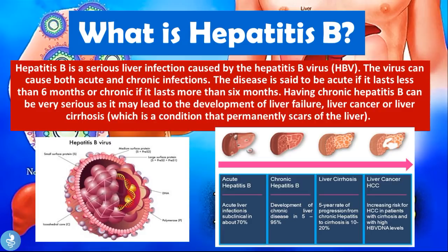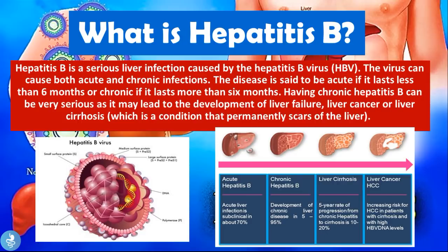In the acute stage, lasting less than six months, patients usually don't experience serious complications because their body is able to fight and destroy the virus. If the virus remains active for six months or more it becomes a chronic infection, where symptoms become a lot more serious. From chronic hepatitis we can progress to liver cirrhosis — fibrosis of the liver — and finally to hepatocellular carcinoma (HCC), which usually occurs in patients with a high HBV DNA level. The Hepatitis B virus is a DNA virus and blood levels of HBV DNA are used as a prognostic factor.